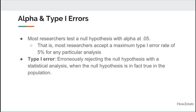A type 1 error is to erroneously reject the null hypothesis with a particular statistical analysis when the null hypothesis is in fact true in the population. For example, you might make a statement about the difference between two means, saying they are statistically significantly different, but in the population they are not different — and so you're committing a type 1 error in that case.